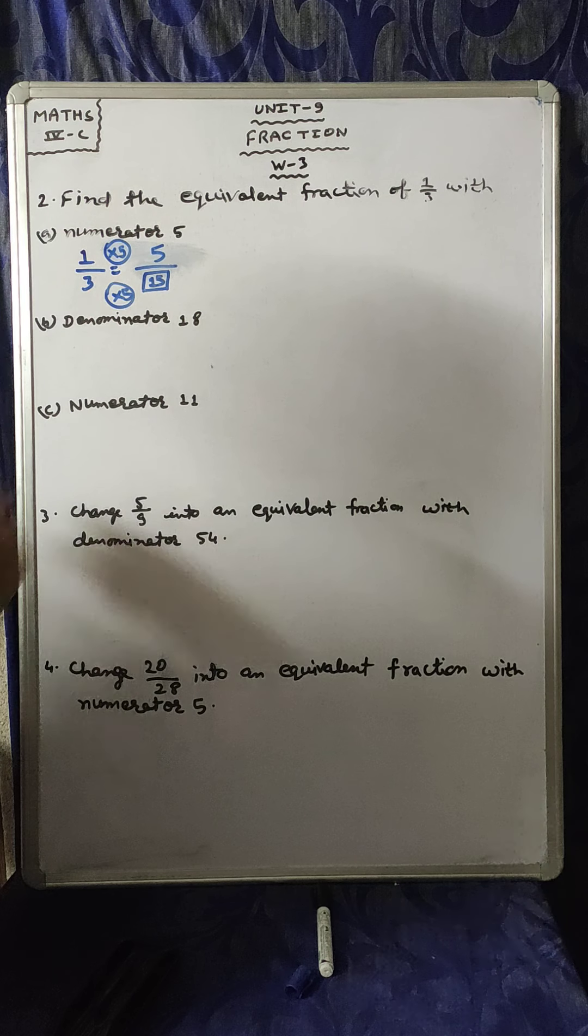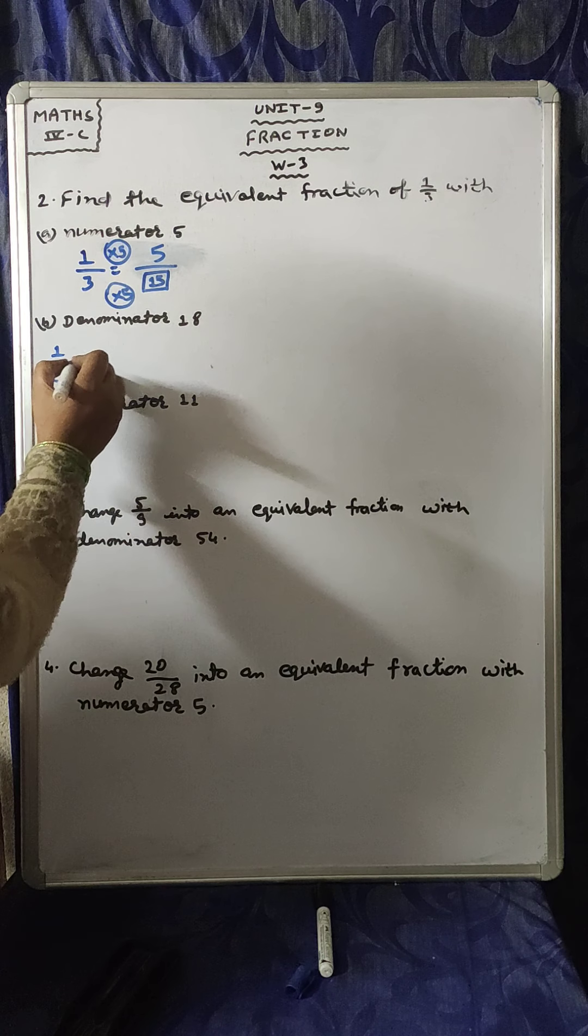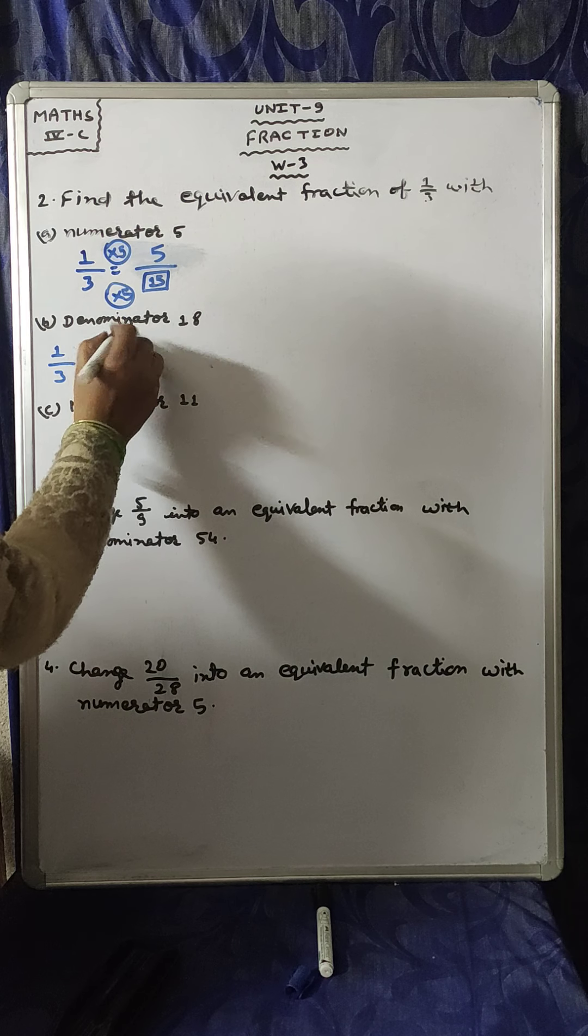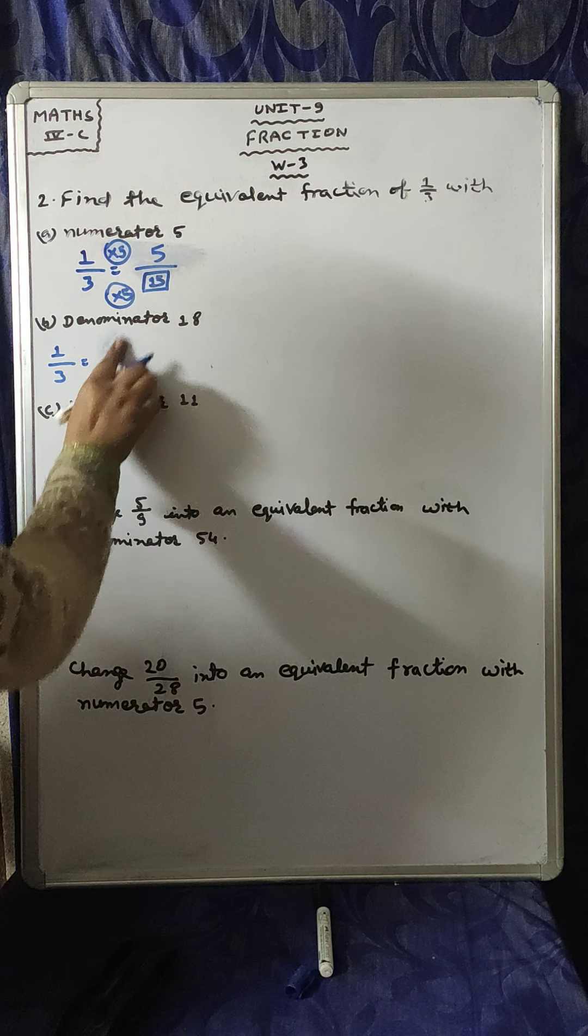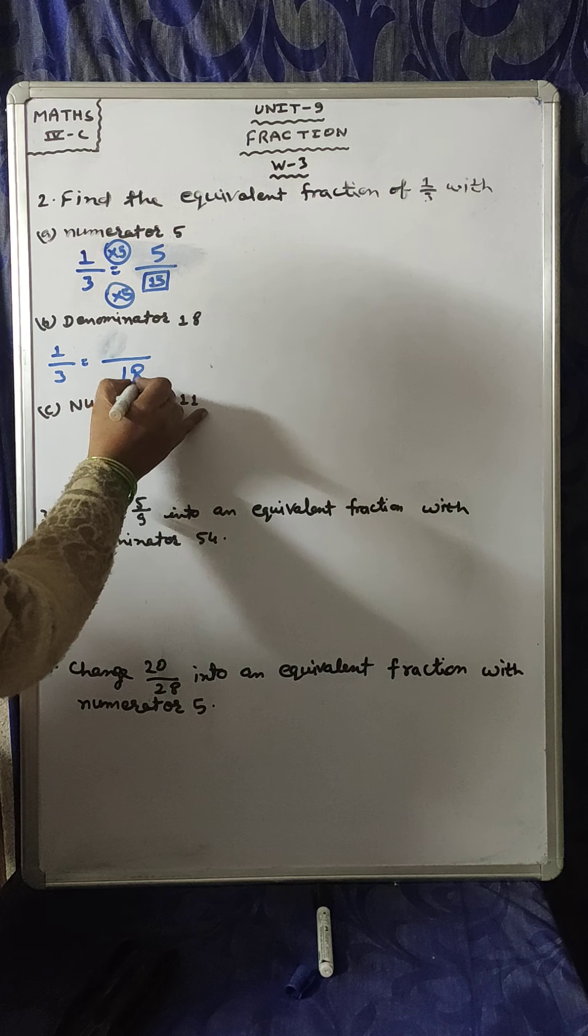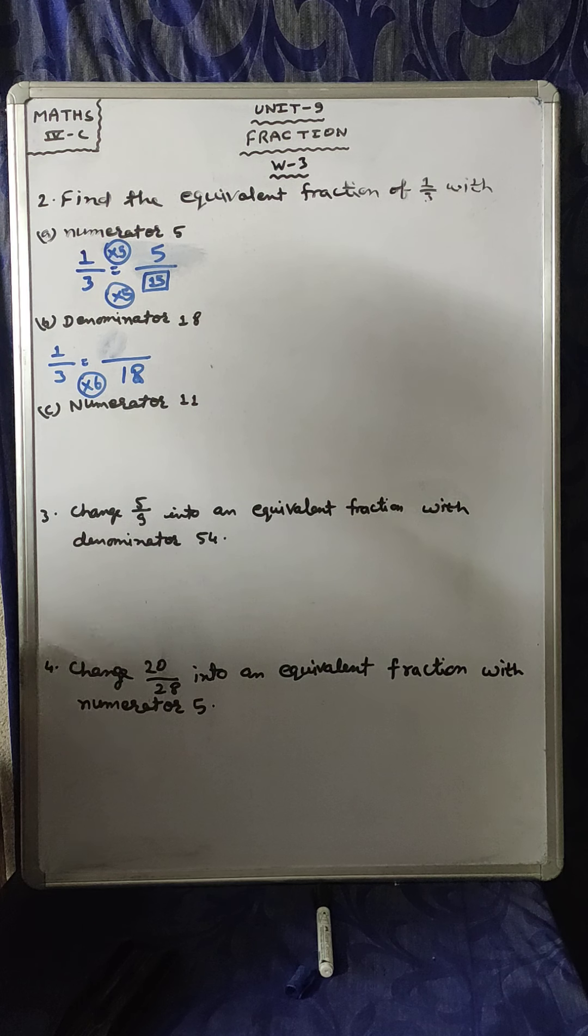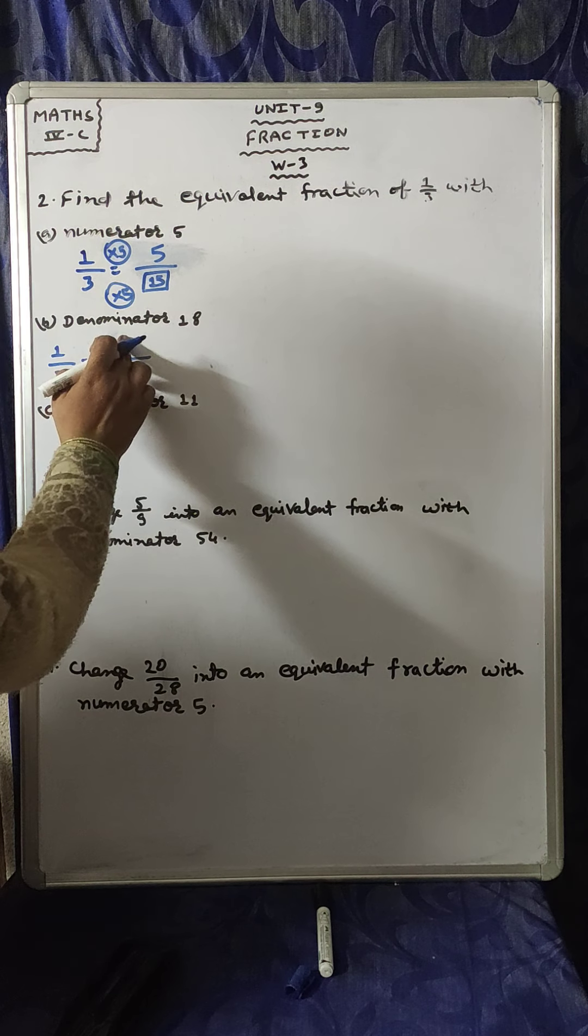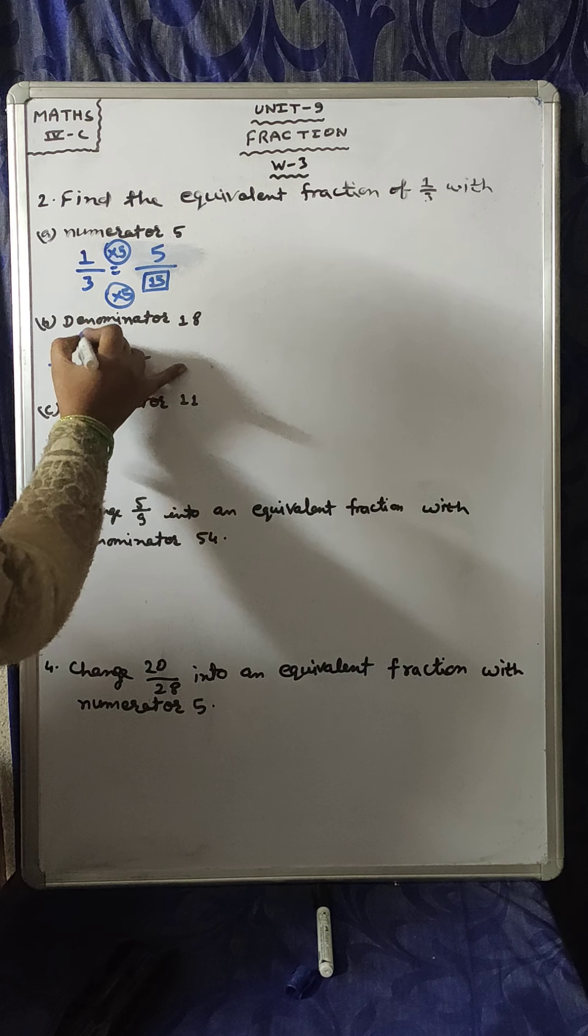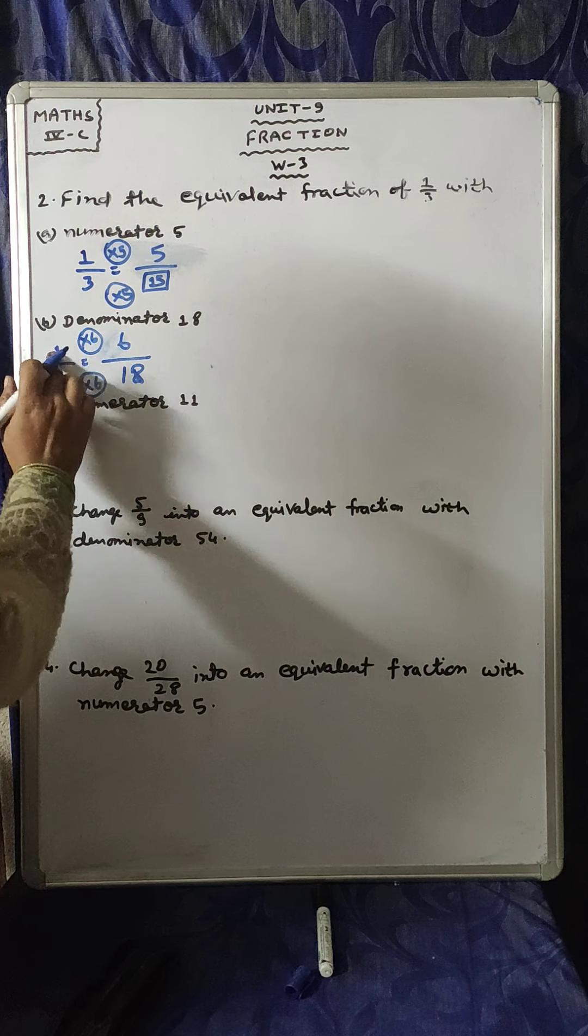Next, the denominator is given here, 18. The fraction is 1/3. The denominator is 18. 18 is 6 times 3, so the numerator must be 6 times 1. 1 times 6 is 6, 3 times 6 is 18. 1 times 6 is 6.